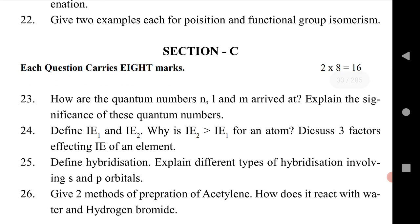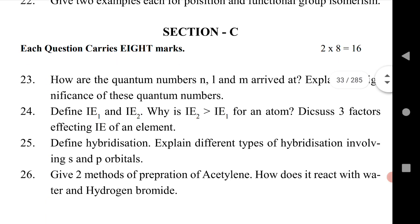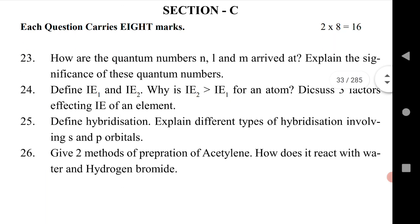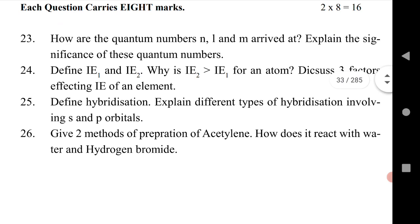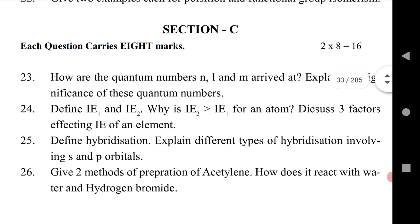Let us see section C, a very important section. It gives 8 marks for each question. Question 23 is asked from atomic structure, 24 is from classification of elements, 25 is from chemical bonding, and 26 is from organic chemistry.